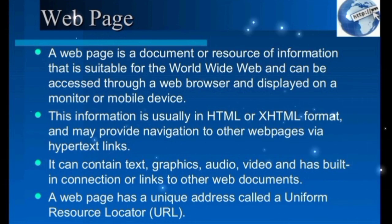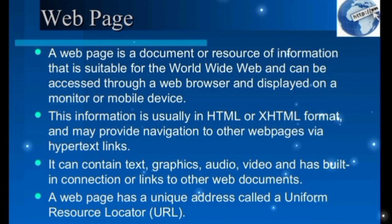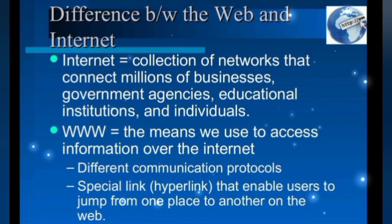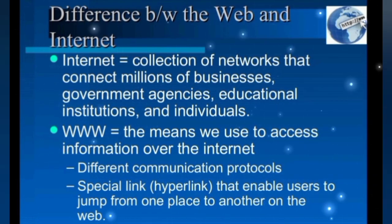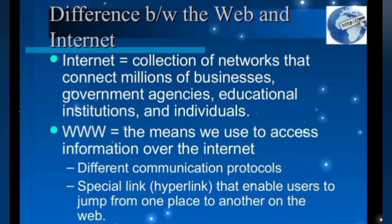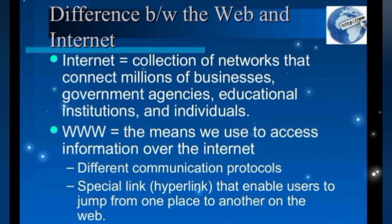A web page is a document or any source of information present over the internet, which can be accessed through the use of a web browser. Every web page has a unique address called a URL. The internet is the network of all the networks present worldwide, whereas the WWW is a means by which we can access different types of information on the internet.